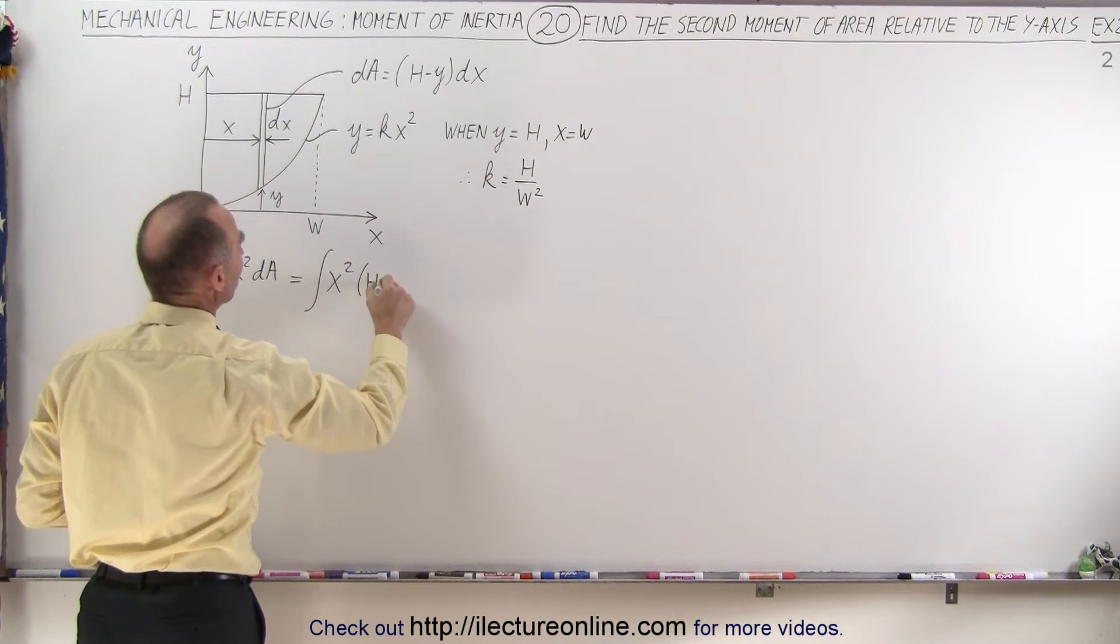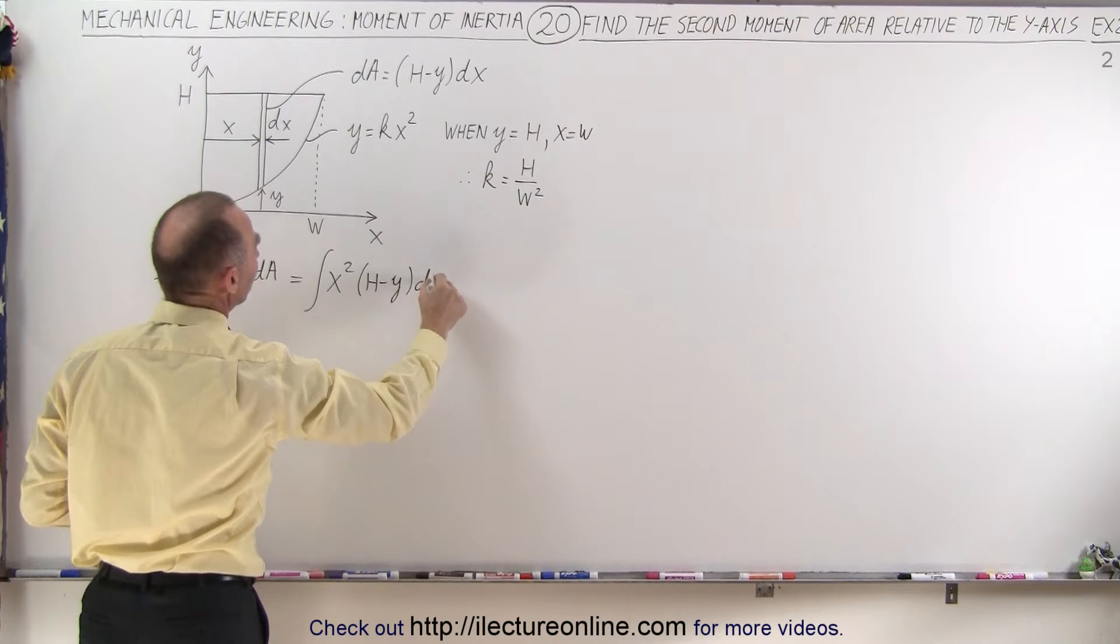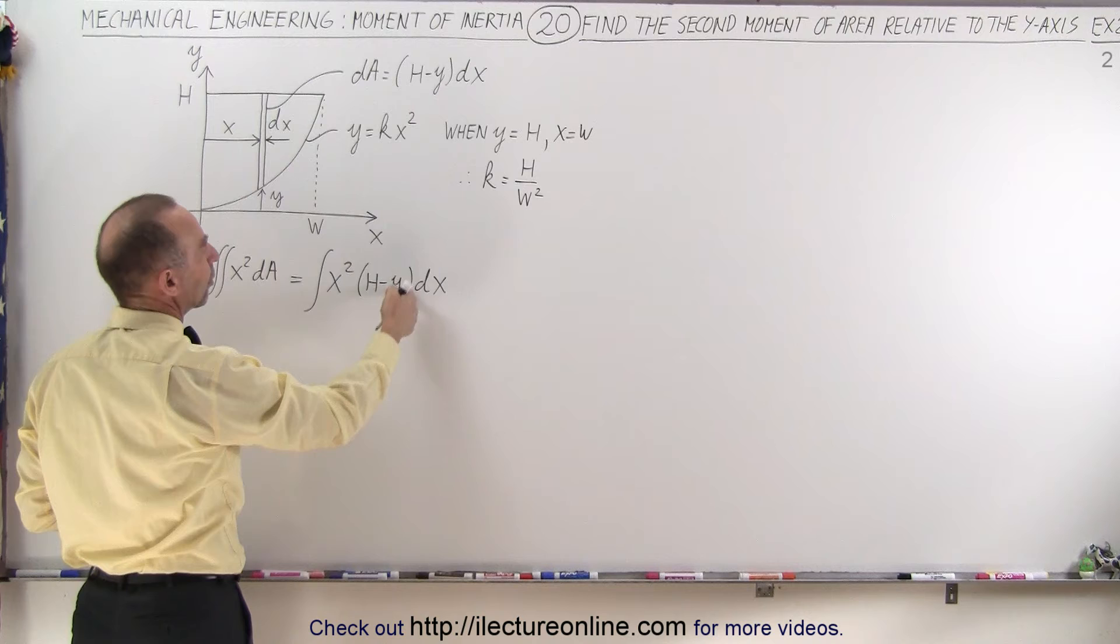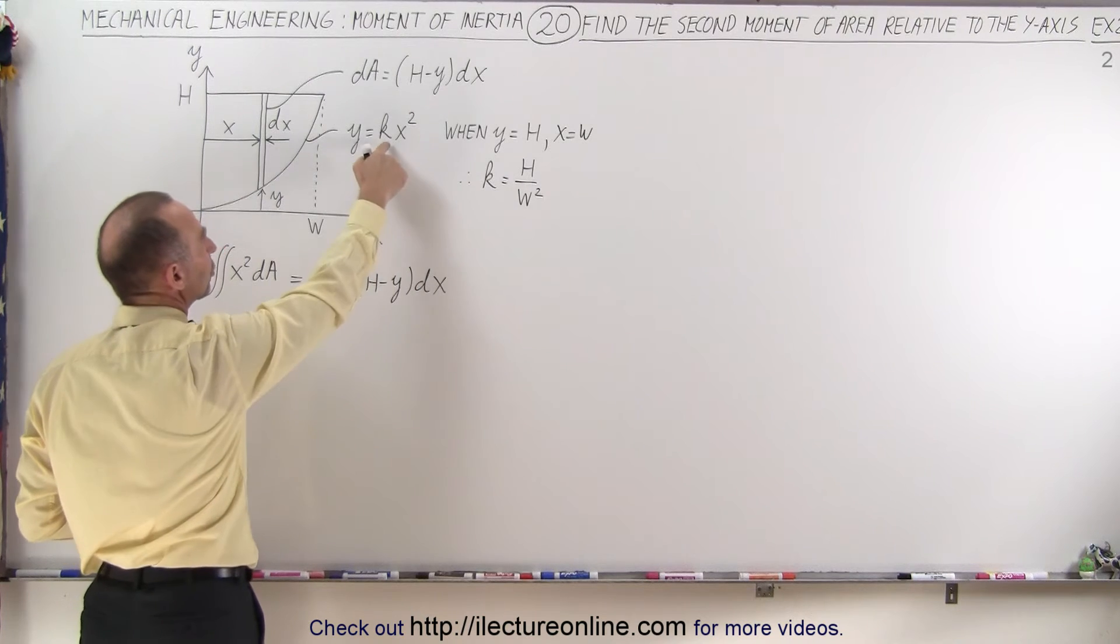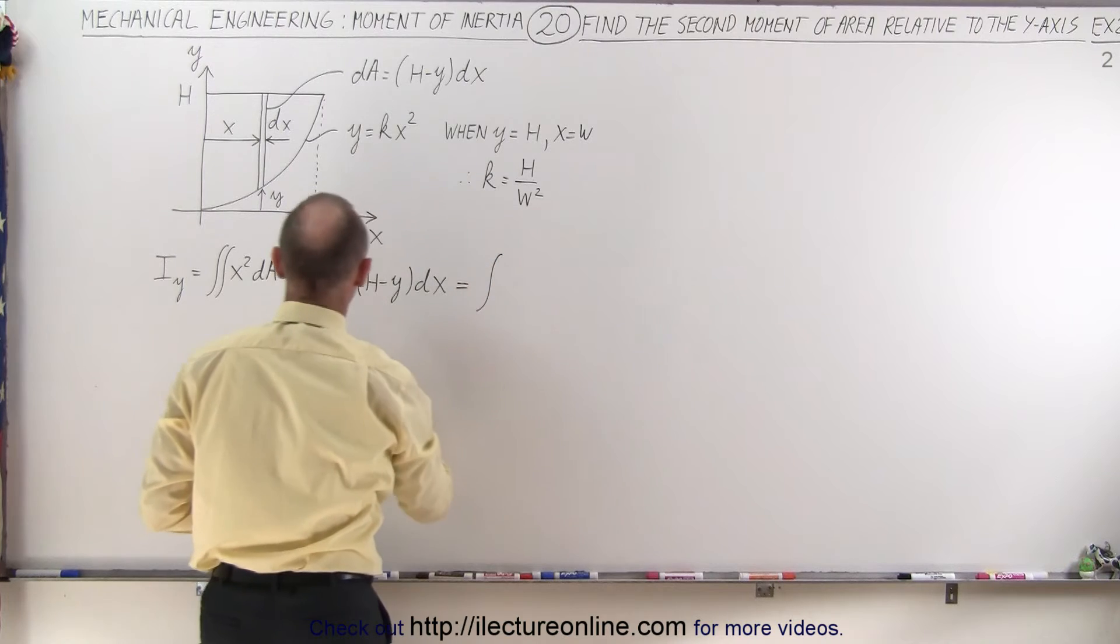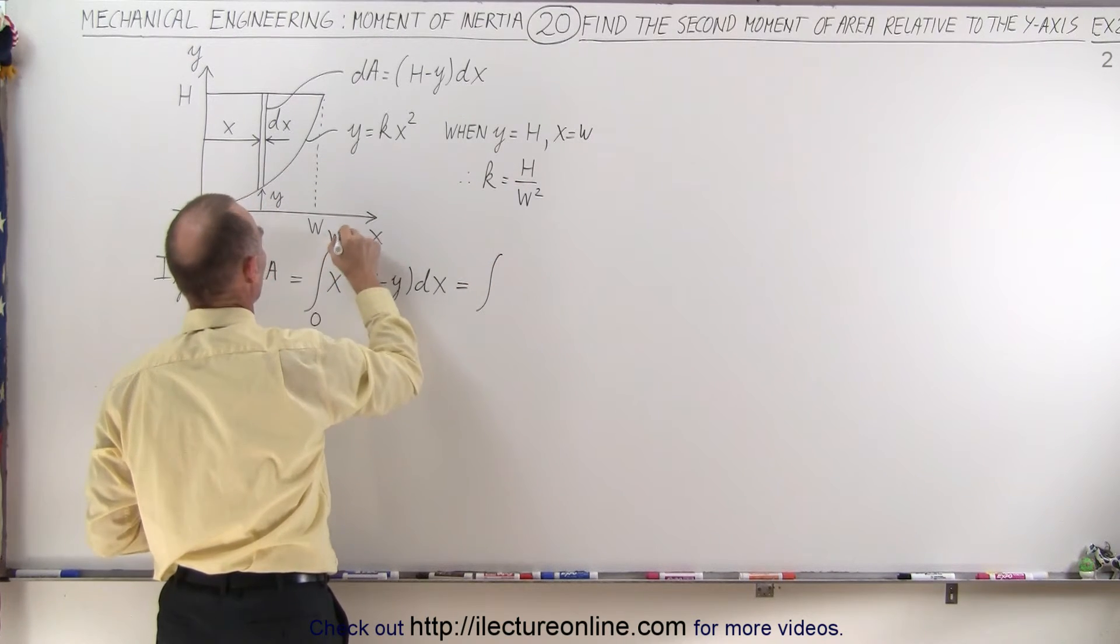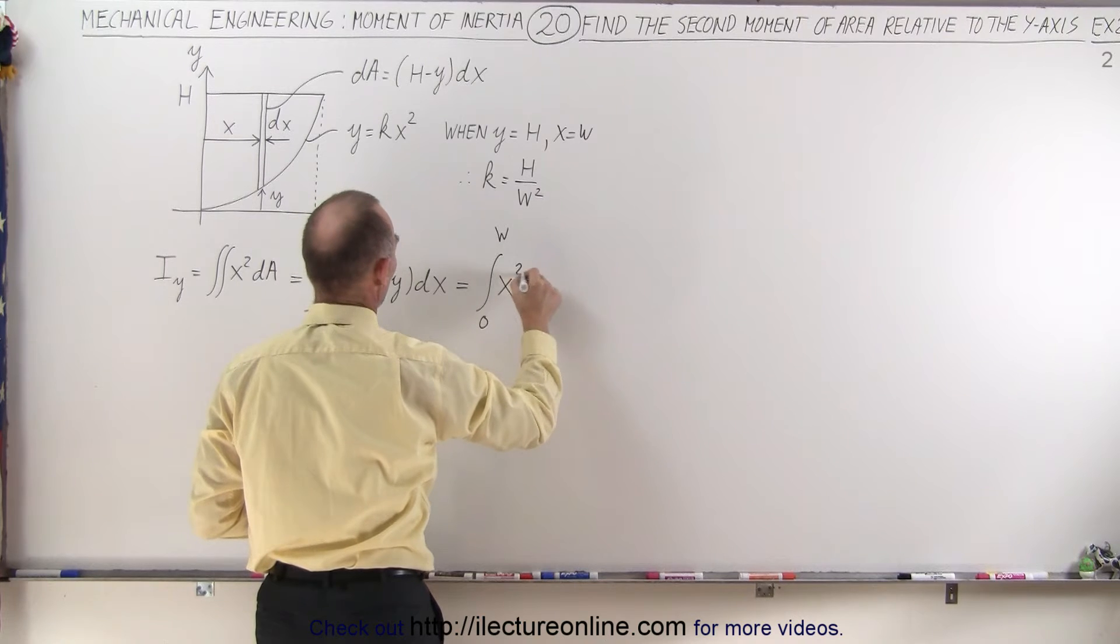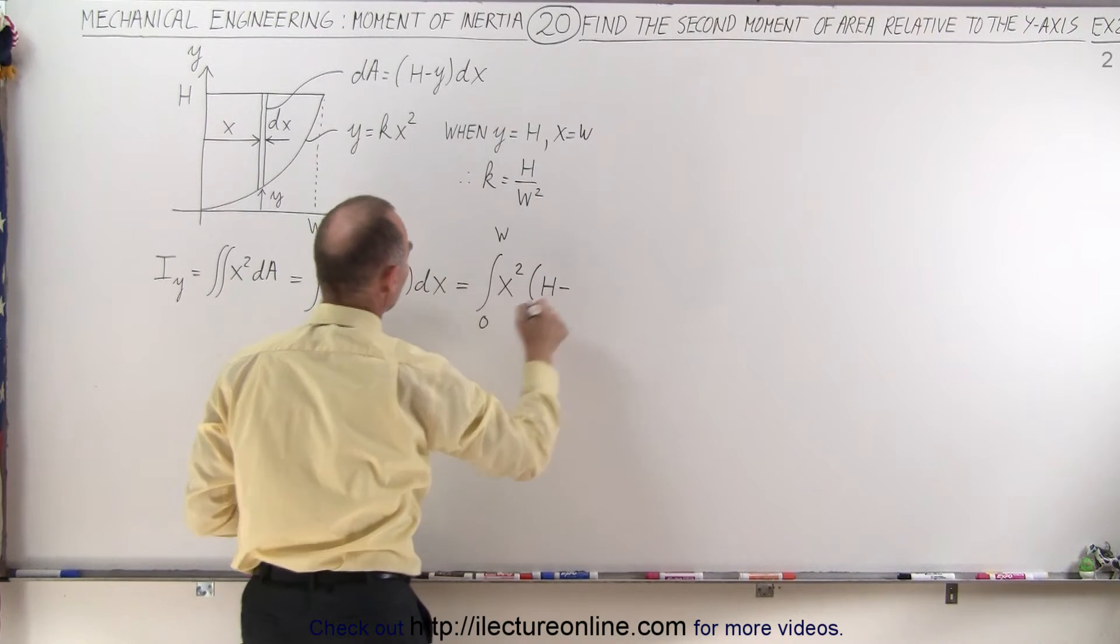You can see now we're only integrating over dx, which means we have to replace y by what y is equal to, which is kx squared. So this becomes equal to integral from 0 to w of x squared times h minus kx squared times dx.